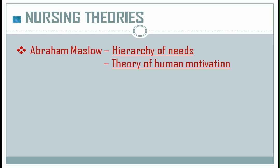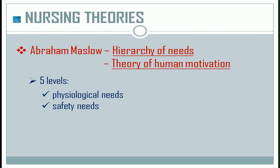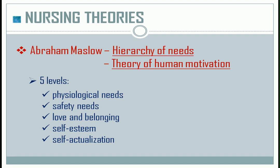Abraham Maslow's hierarchy of needs is a theory of human motivation in psychology that includes five levels. It starts from the most basic needs — physiological needs, safety needs, love and belonging, self-esteem, and self-actualization. Next is the Nursing Process.